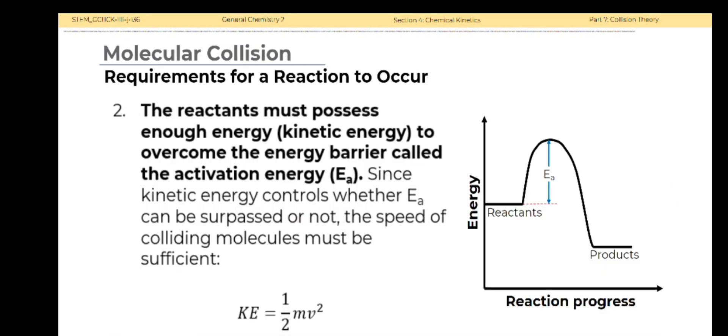The reactants must possess enough energy in the form of kinetic energy to overcome the energy barrier called the activation energy. As the reactant molecules collide with each other, energy redistribution occurs which arises from various bond-forming and bond-breaking processes. Since kinetic energy controls whether the activation energy can be surpassed or not, the speed of colliding molecules must be sufficient.